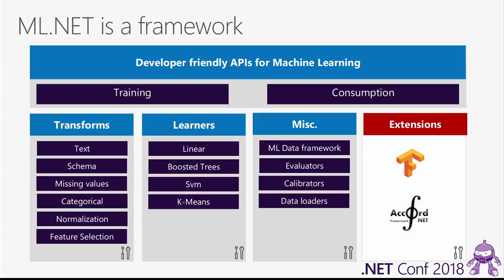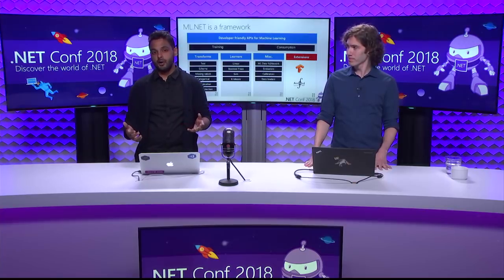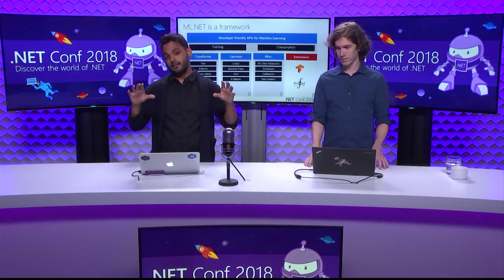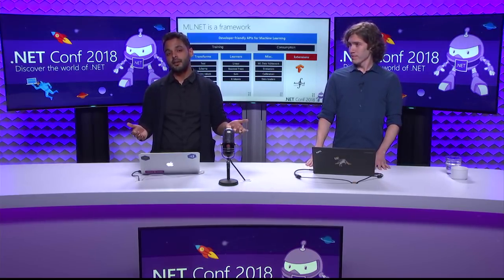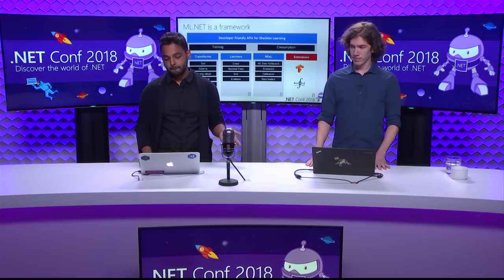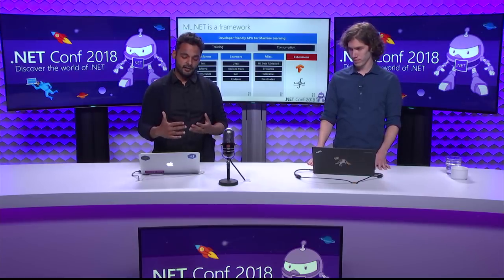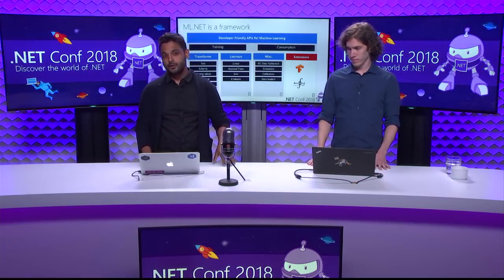ML.NET is also extensible. As popular first-party or third-party frameworks come into being — for example, TensorFlow, which we'll talk about later — we wire them up as part of ML.NET. You can then use TensorFlow and other frameworks through the same consistent developer-friendly APIs. This should give you a good idea of what the framework is, what components it comes with, and as we do the demos, you'll see these in action.